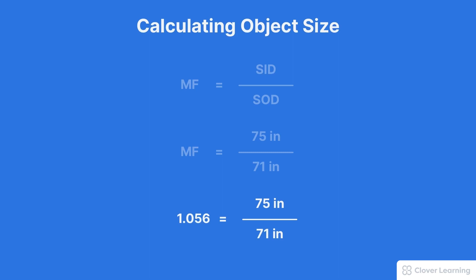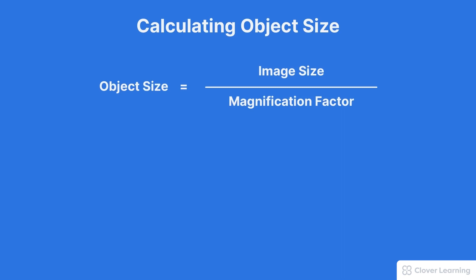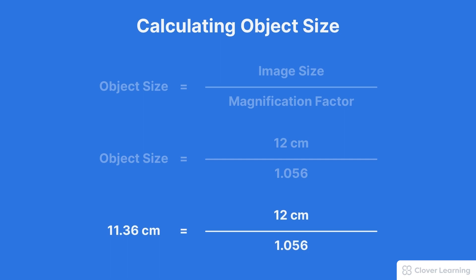This makes sense. The magnification factor is always going to be larger than 1 because the radiographic appearance is always larger than the actual anatomy. We can take this number now and insert it into the formula for calculating the object size. The object size, that's the actual anatomy, is equal to 12 centimeters, that's the image size, divided by 1.056, that's the magnification factor, which equals 11.36 centimeters.